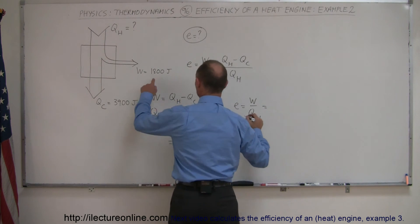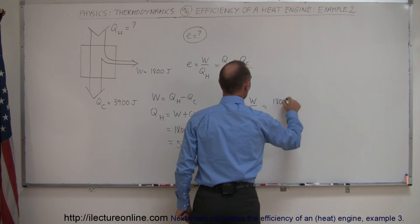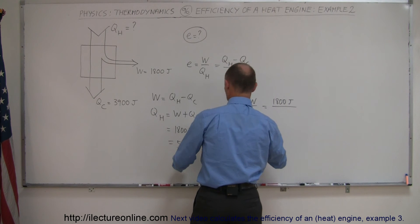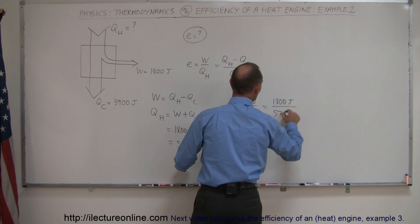In this case, the work is 1,800 joules and Q_hot is, as we just calculated, 5,700 joules.